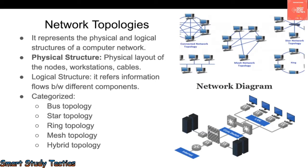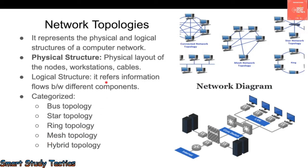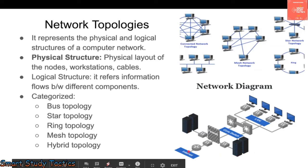If we categorize network topology, we generally have bus topology, star topology, ring topology, mesh topology, and hybrid topology. Some small figures are shown here — I will explain all of them in detail. As you can see, there is an example network diagram showing a firewall, core switch, LAN, and other components.